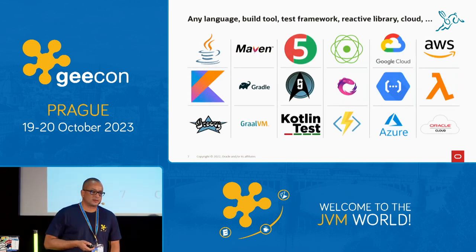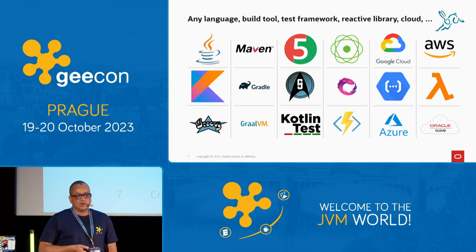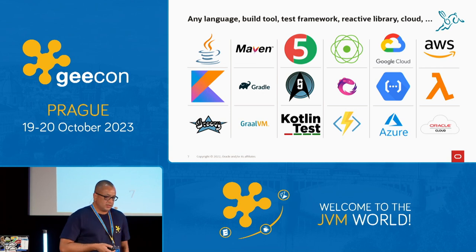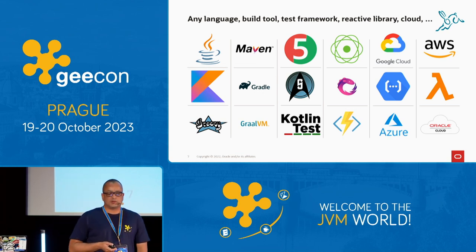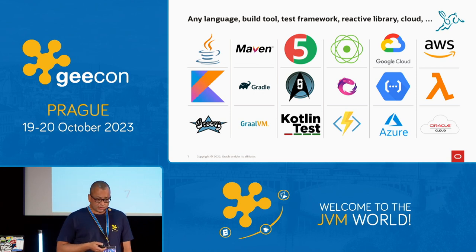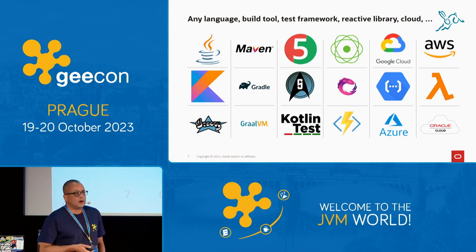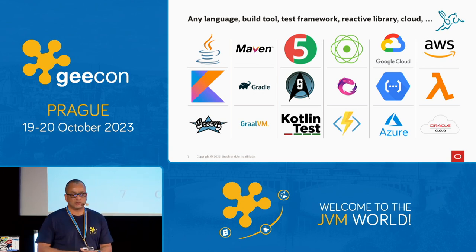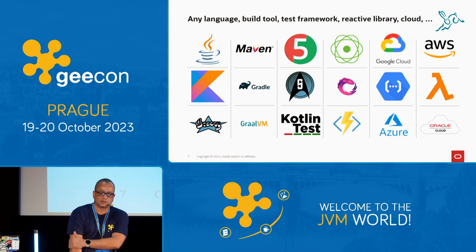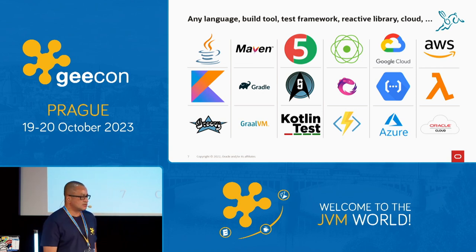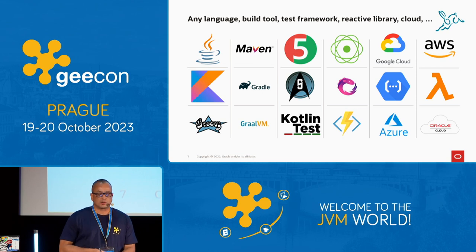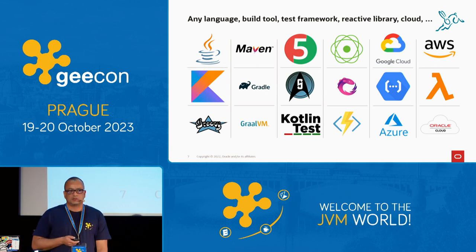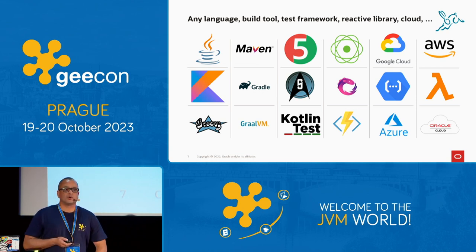Micronaut is quite comprehensive and flexible. You can see all the familiar logos — build tools Maven and Gradle, GraalVM, Groovy and Kotlin supported as JVM-friendly languages, all the clouds including serverless with Oracle Functions and Azure Functions. The other cloud providers are here too, just because this is a talk about Micronaut.